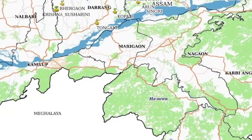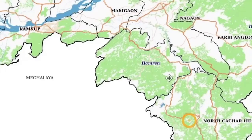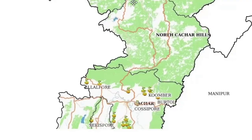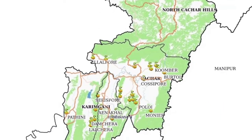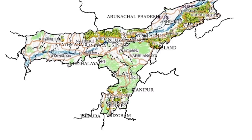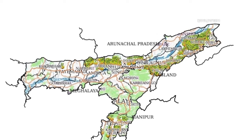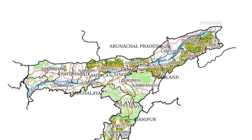Now coming to the southern part of Assam, there we can see in Cachar, Karimganj, and Hailakandi there are many tea growing areas.